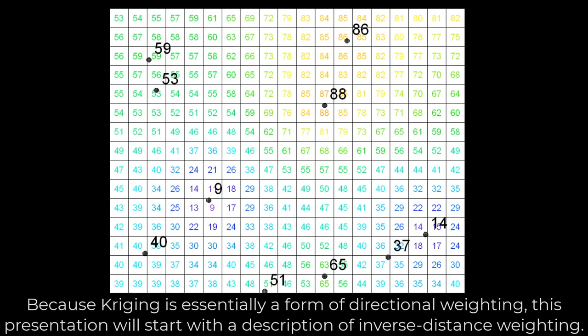Because Kriging is essentially a form of directional weighting, this presentation will start with a description of inverse distance weighting.